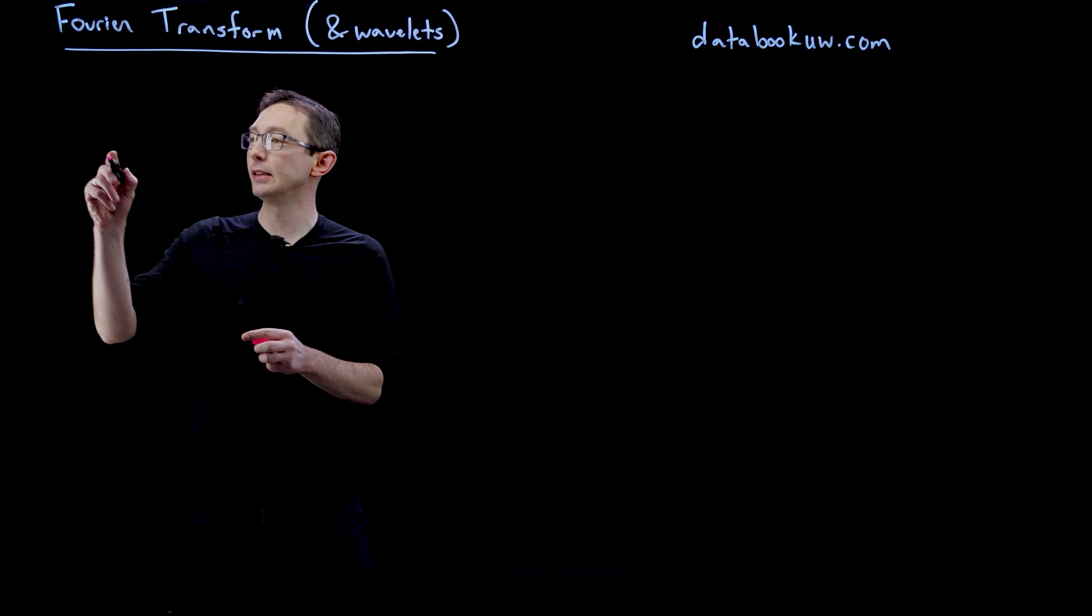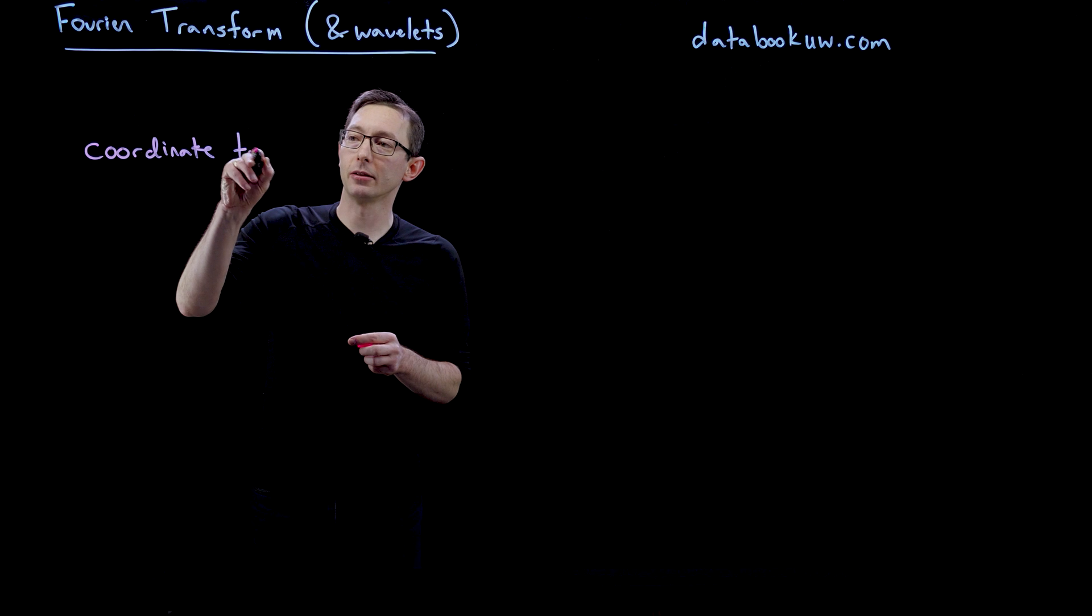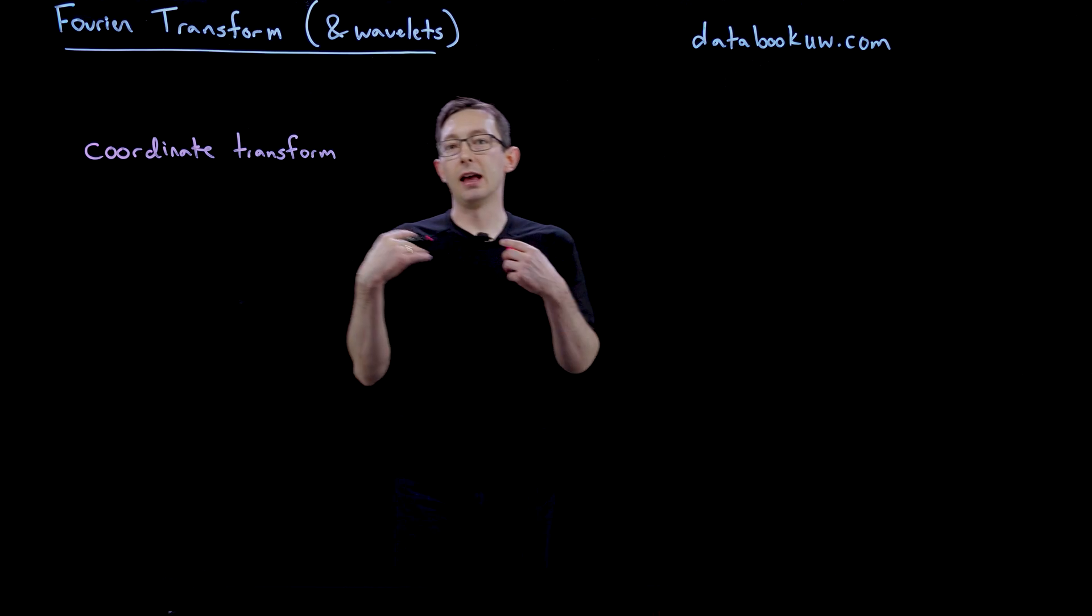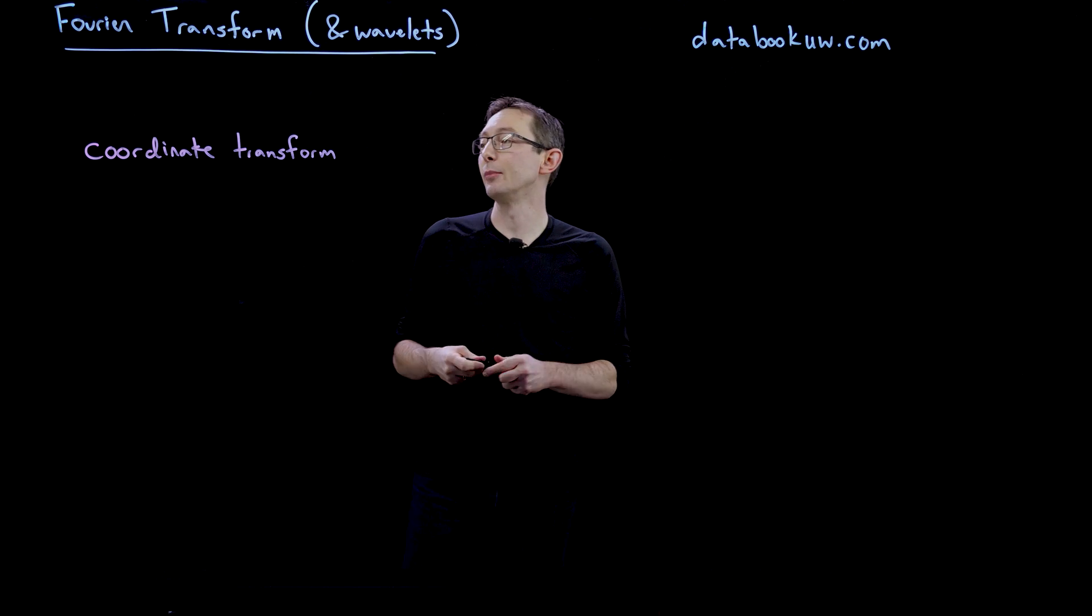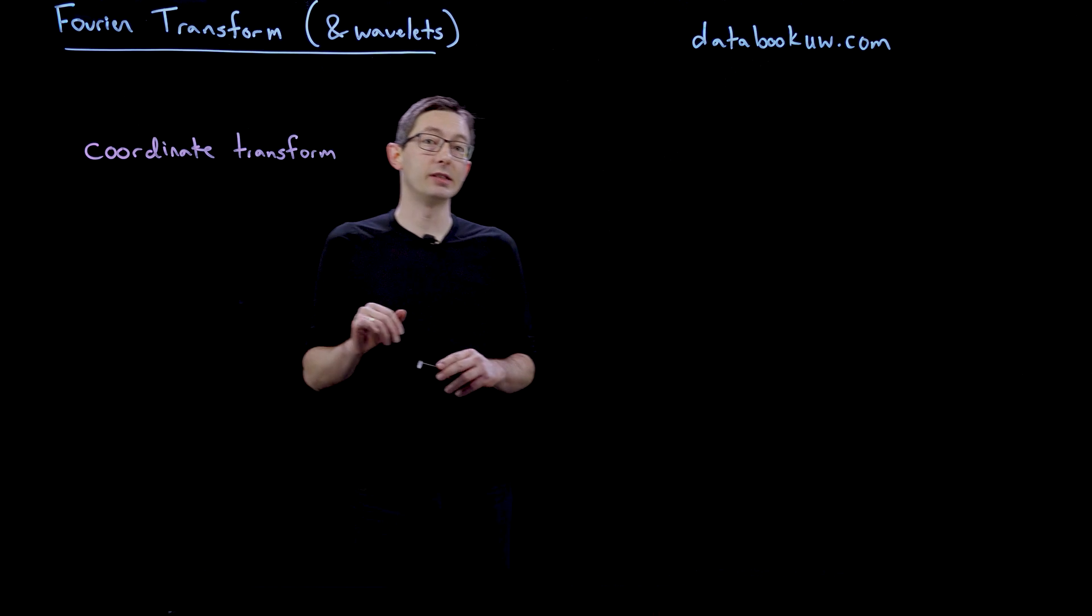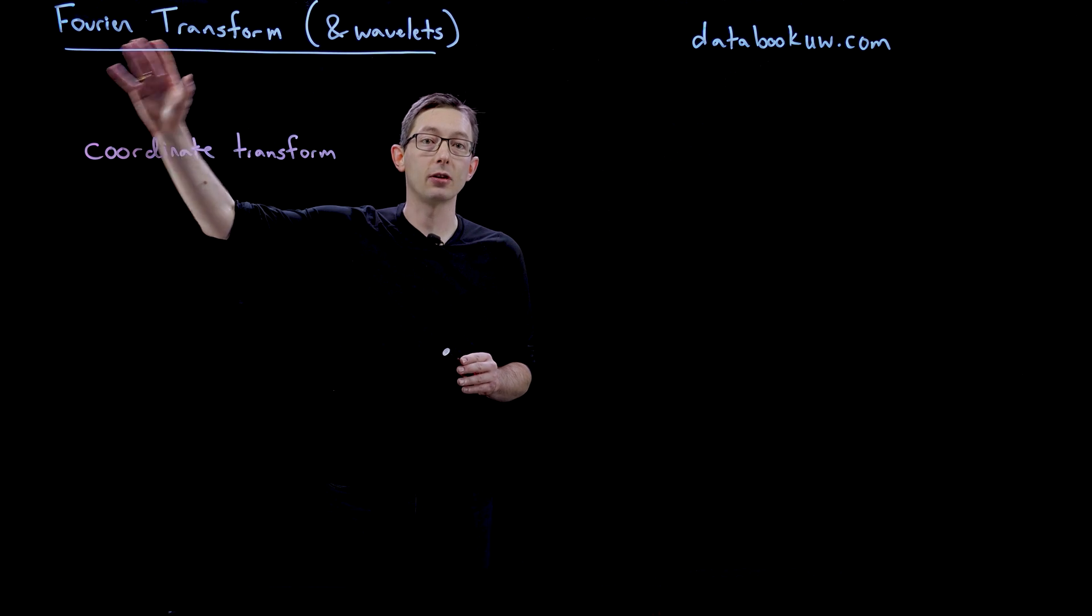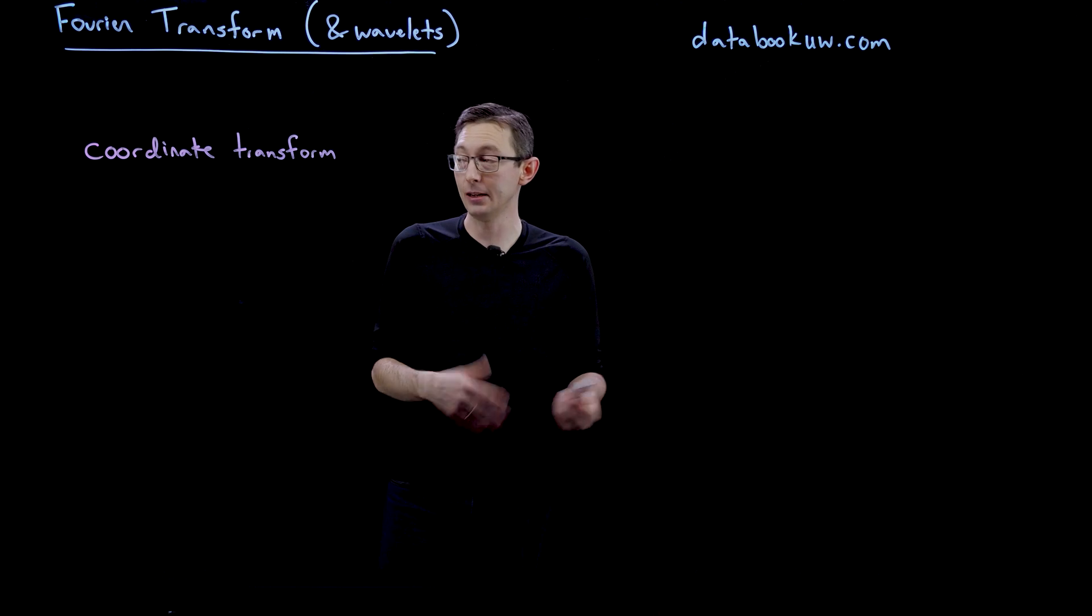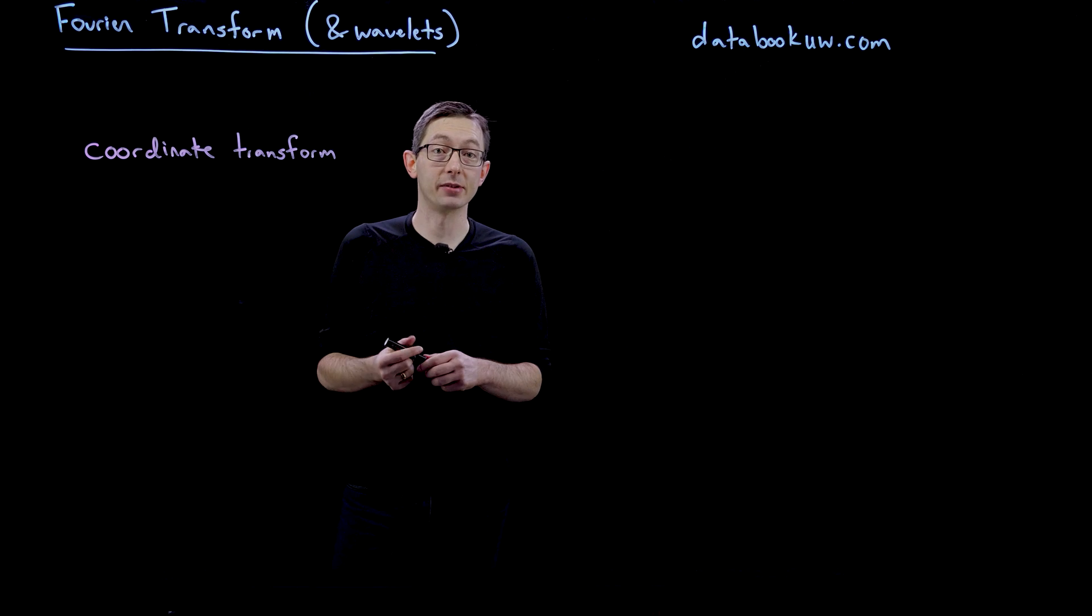The Fourier transform is a coordinate transformation that is particularly useful for representing data and images, for representing the solution of partial differential equations. I'm going to walk you through all the different uses of this Fourier transform, the mathematical theory, how to compute it in MATLAB and Python with the fast Fourier transform, the FFT, and also the history and how this was derived.